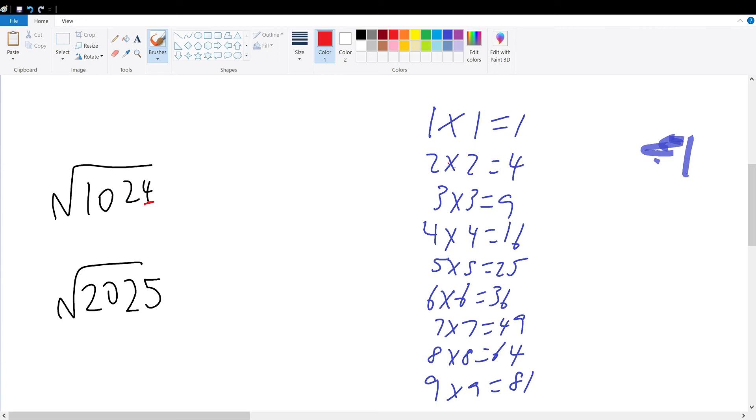And you see which numerals tied together ends in 4. So 2 times 2 ends in 4, and 8 times 8 ends in 4. Okay?